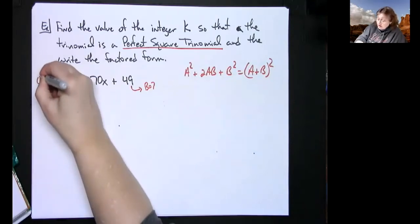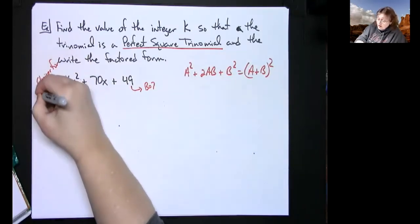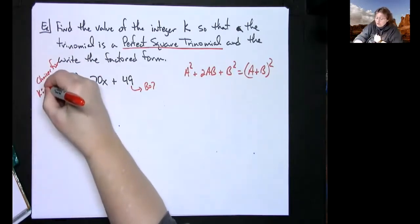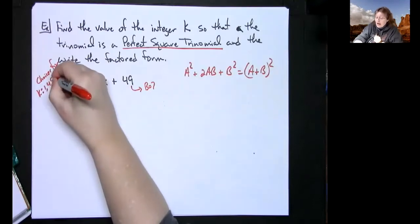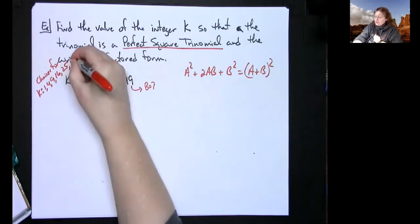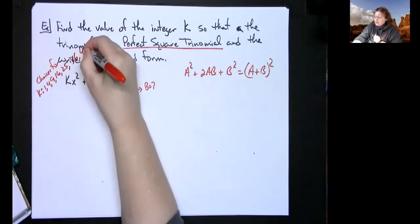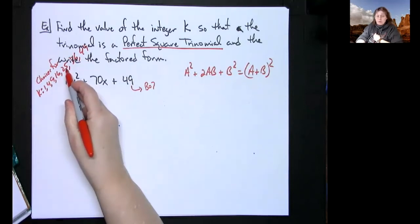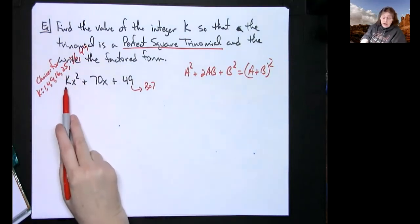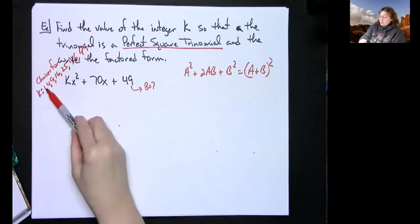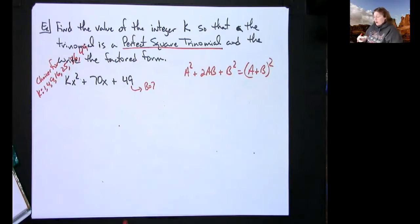Now, the choices for k have to be perfect square numbers: 1, 4, 9, 16, 25, 36 — you can see the pattern: 1×1, 2×2, 3×3, 4×4, 5×5, and so on. So k has to be one of these numbers.